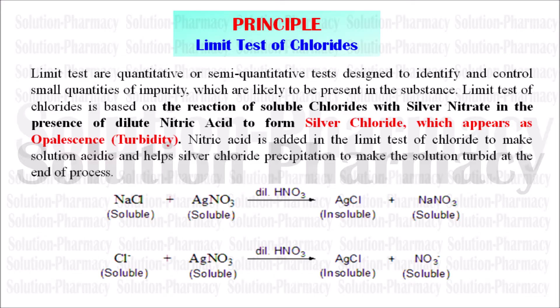It is generally carried out to determine the inorganic impurities present in a compound. In short, limit test is to identify the impurities present in the substance and compare them with a standard — to find out whether the amount of impurities present is within the limit or beyond the limit, i.e., whether the impurities are avoidable or unavoidable.